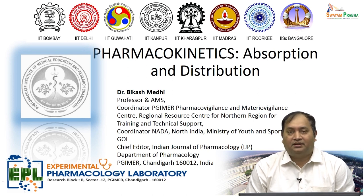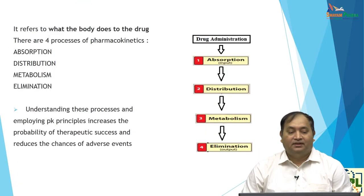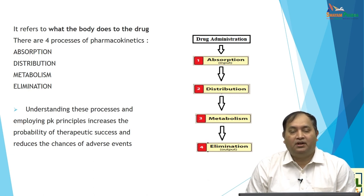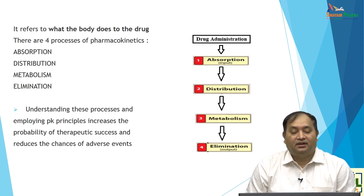When you talk about how drug movement takes place in the body, the term pharmacokinetics refers to how the drug is absorbed, distributed, metabolized, and then eliminated. You commonly call it ADME. There are four processes of pharmacokinetics.